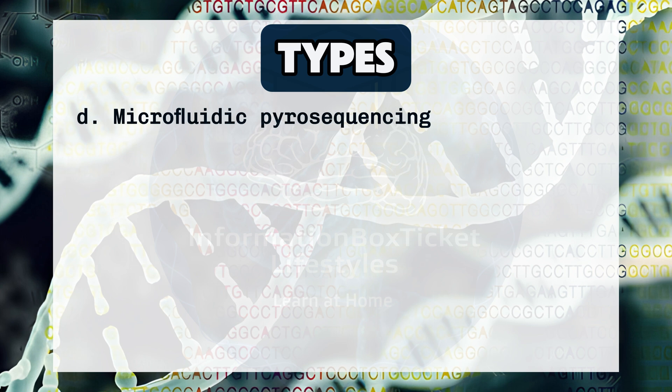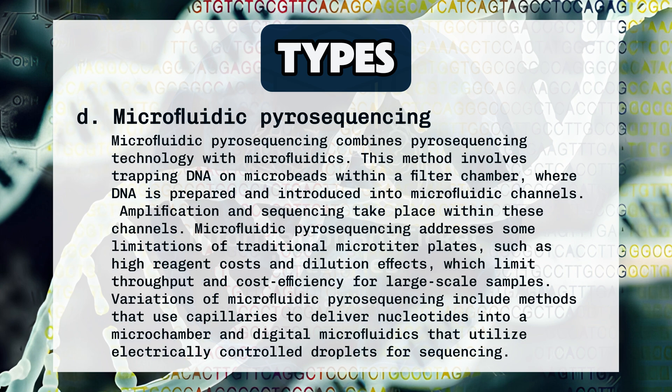Microfluidic Pyrosequencing combines pyrosequencing technology with microfluidics. This method involves trapping DNA on microbeads within a filter chamber, where DNA is prepared and introduced into microfluidic channels. Amplification and sequencing take place within these channels. Microfluidic pyrosequencing addresses limitations of traditional microtiter plates, such as high reagent costs and dilution effects. Variations include methods using capillaries to deliver nucleotides into a microchamber, and digital microfluidics that utilize electrically controlled droplets for sequencing.